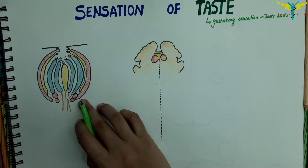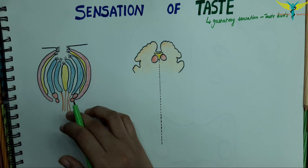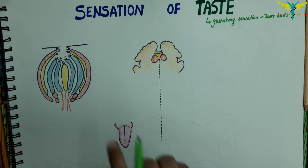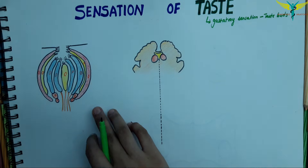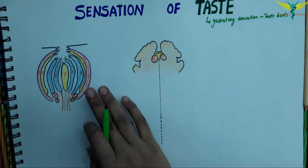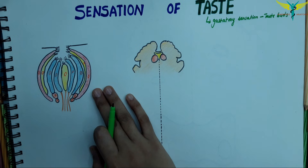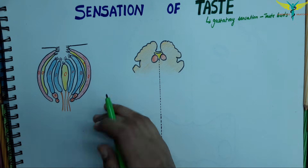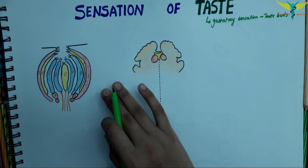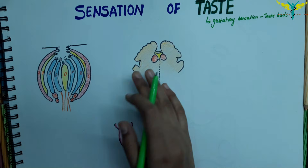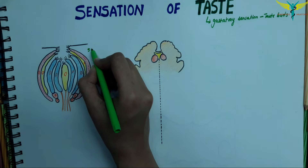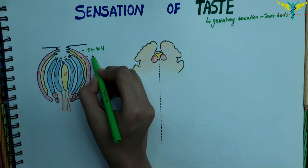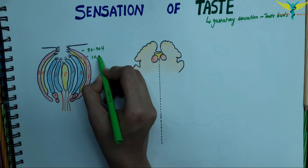Taste buds are ovoid bodies with a diameter of 50 to 70 microns. In adults, about 10,000 taste buds are present. The number is more in children, and in old age many taste buds degenerate and taste sensitivity decreases.